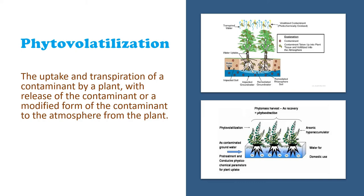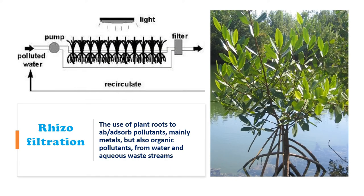Rhizofiltration uses plant roots to absorb or adsorb pollutants — mainly metals but also organic pollutants — from water or aqueous waste streams. This technology is used in artificial wetland systems where domestic or industrial wastewaters are treated. Plants like Typha are used because their roots act as a sieve, filtering organic and metallic substances to produce less-polluted water suitable for irrigation.